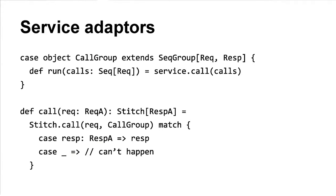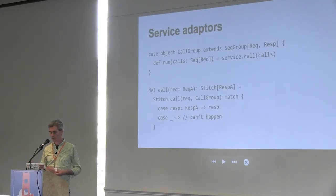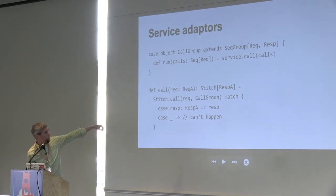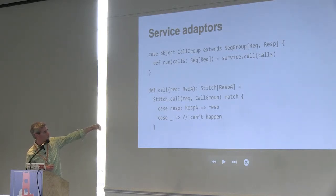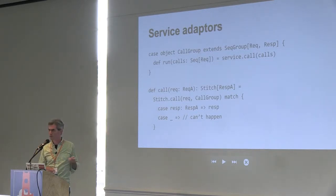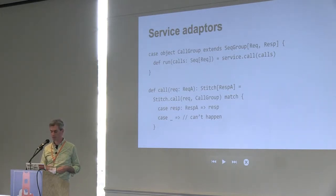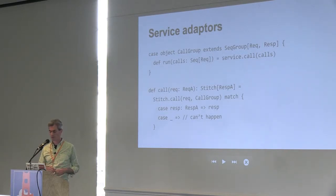We have this single-key view of the world, but we actually have to talk to the backend services which do not have this view. So we have a set of service adapters, one per service. What we want to do here is implement the single-key call method that takes a request to a Stitch of response. The call group talks about how to batch these things together: if I get a call with this call group, it can be batched with any other call of the same call group. The call group also explains how to make the underlying batch service call. Now we still have this problem that the result might be of the wrong type, but we've just moved that type-safety concern into the service adapter rather than the application code. So the application code is really clean.